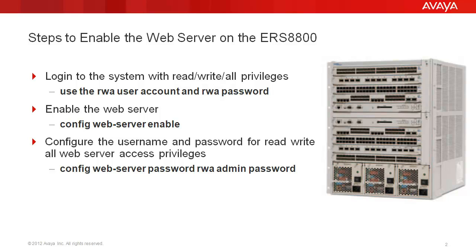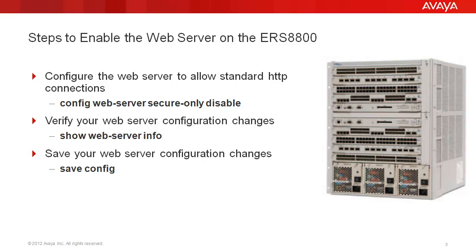In our tech tip example, we will use the following steps to enable the web server on the ERS 8800. We'll log into the system with read-write-all privileges using our RWA user account and RWA password. We'll enable the web server using the web server enable command. We'll configure the user name and password for read-write-all web server access privileges. We'll configure the web server to allow standard HTTP connections using the secure only disable command. We'll verify our web server configuration changes with the show web server info command, and finally save our changes with the save config command.